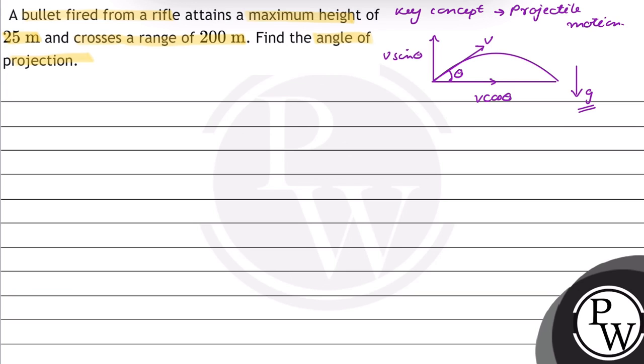The maximum distance which the horizontal direction travels is defined as range and the formula is v0 square sin 2 theta by g, which theta is the angle with horizontal. And the maximum vertical height attained by the particle is given by v0 whole square sin square theta by 2 g.